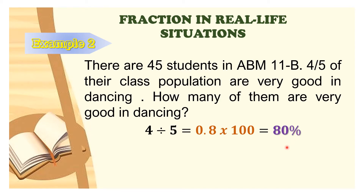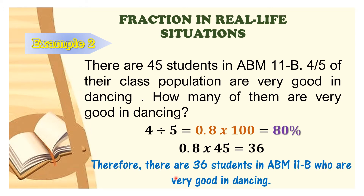To identify the exact number of students who are very good in dancing, we must get the decimal form of 80%, which is 0.8, and multiply that by the total number of students in the class. So we have 0.8 times 45 — 45 being the total number of students in ABM 11B. By multiplication, that is equal to 36. Therefore, there are 36 students in ABM 11B who are very good in dancing.